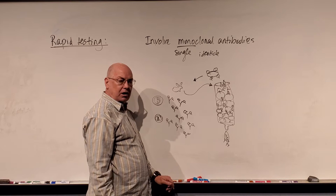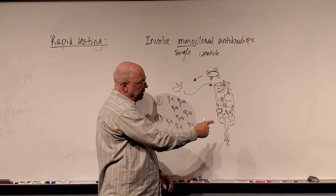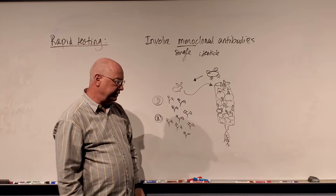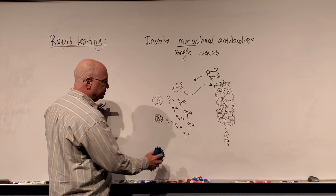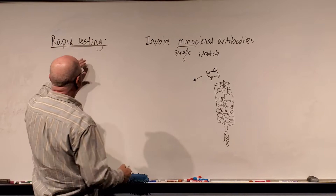You run an elution fluid through the column, which will break the bond between the antibody and the antigen, and then you can wash out the antibodies and isolate and purify them. They're called monoclonal antibodies. It's a complex and expensive process, but you can develop monoclonal antibodies against a specific antigen. Once I have those antibodies, I can do lots of rapid testing with them.